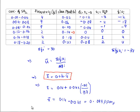Hence, the mean concentration of SO2 in air is 0.099 ppm.